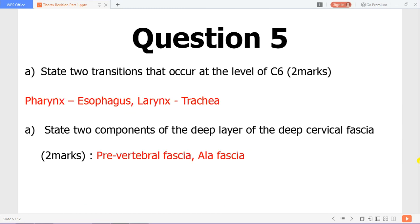The transitions that occur at the level of C6 - the pharynx becomes the esophagus, the larynx becomes the trachea, and this is where you also find the carotid tubercle of C6. The components of the deep layer of the deep cervical fascia are the prevertebral fascia and the ala fascia.